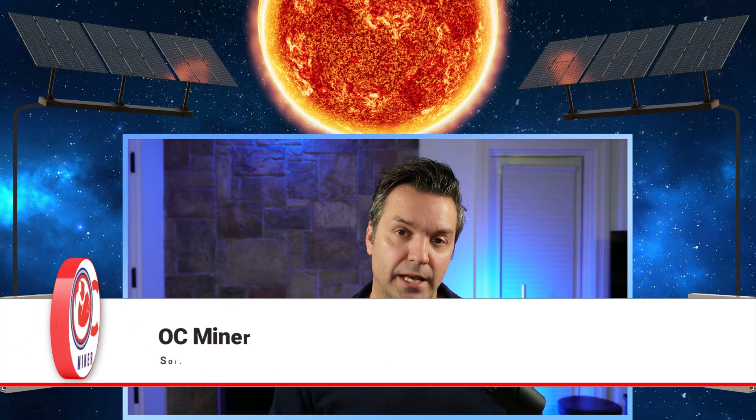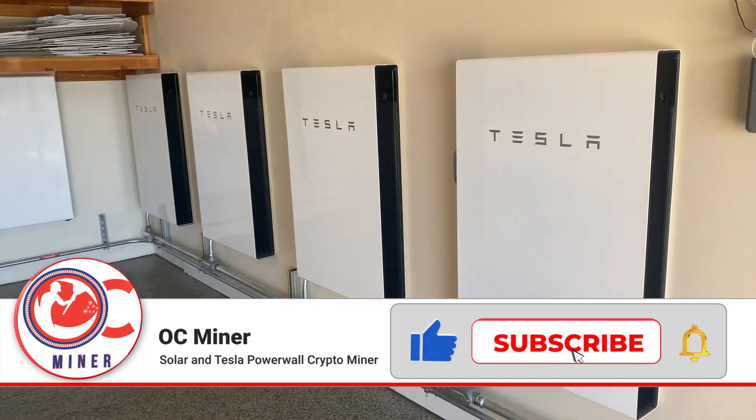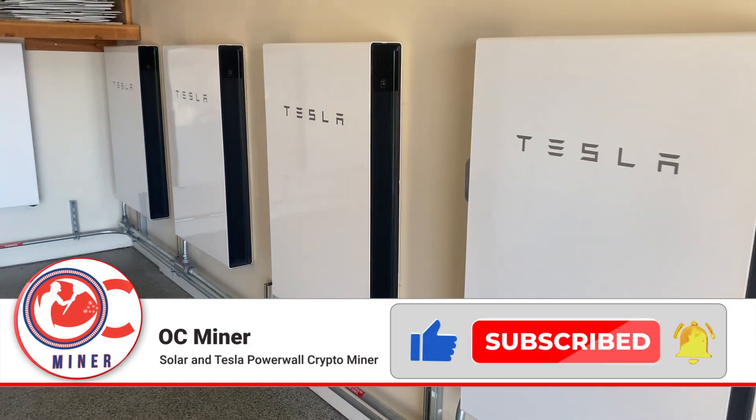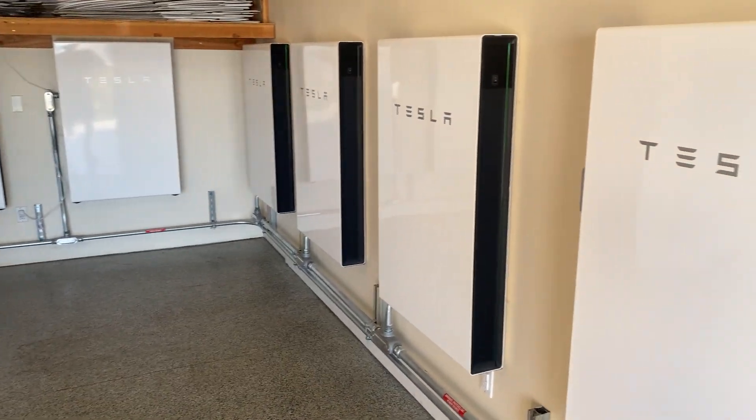My installation has six Tesla Powerwall 2 Plus batteries. Each battery can hold 13.5 kilowatt hours of energy, and that's stackable, so I have a total of 81,000 kilowatt hours of energy. Each Powerwall can run a continuous load of five kilowatt hours, and that's stackable as well, so by having six, at any one time, I can run a continuous load of 30 kilowatt hours of energy at a time. It will also surge up to seven kilowatt hours, but to just run a continuous load, it's going to be 30 kilowatt hours.